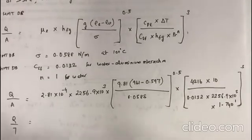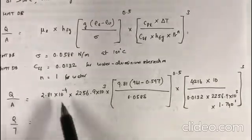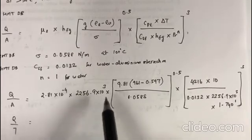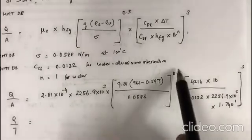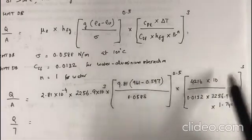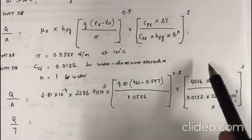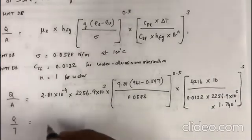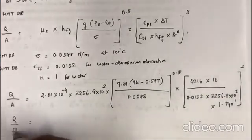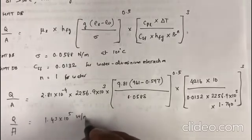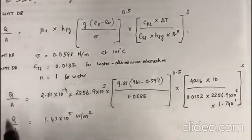So this equation has to be solved with utmost care using your calculator. I recommend that you solve this term first, have this value separately, solve this separately, and then finally multiply all these values to get 1.43 × 10⁵ W/m². This is the heat flux.